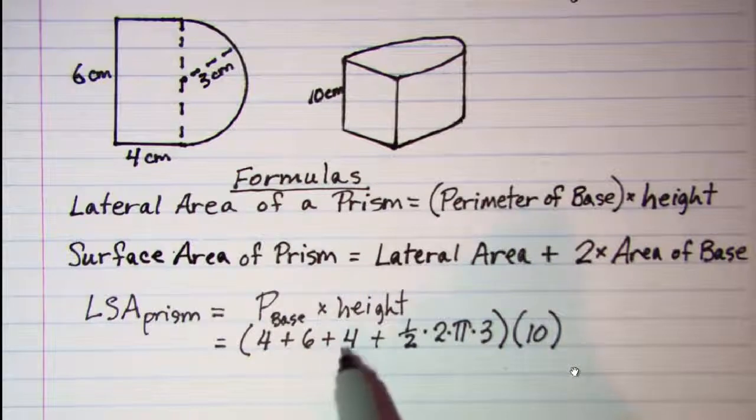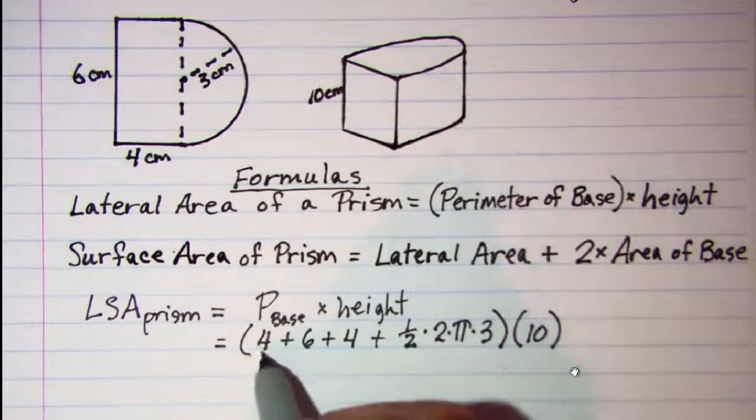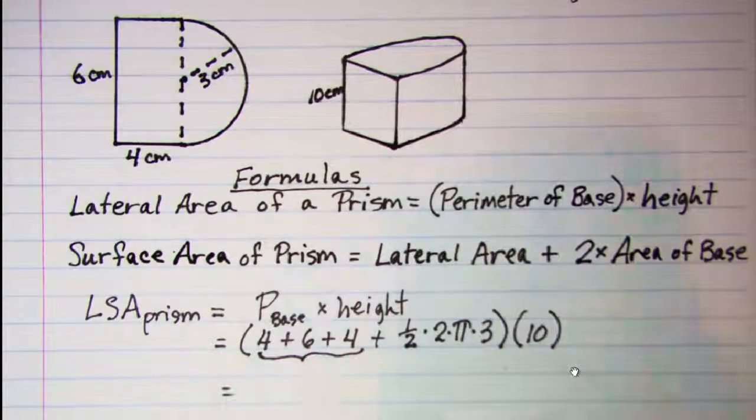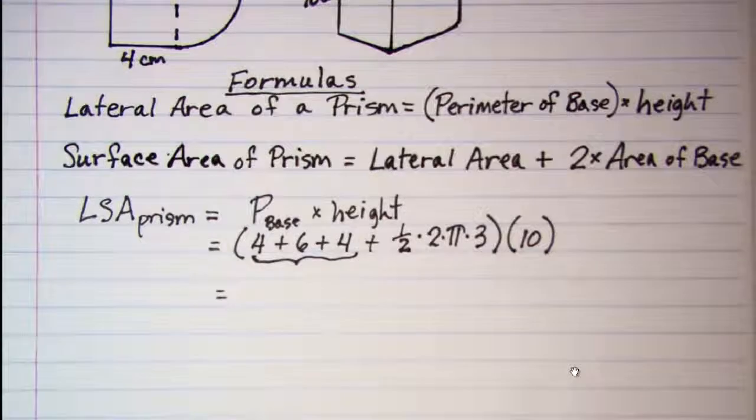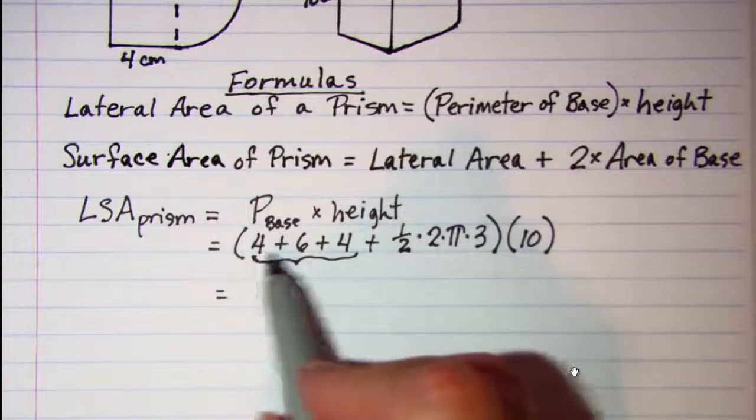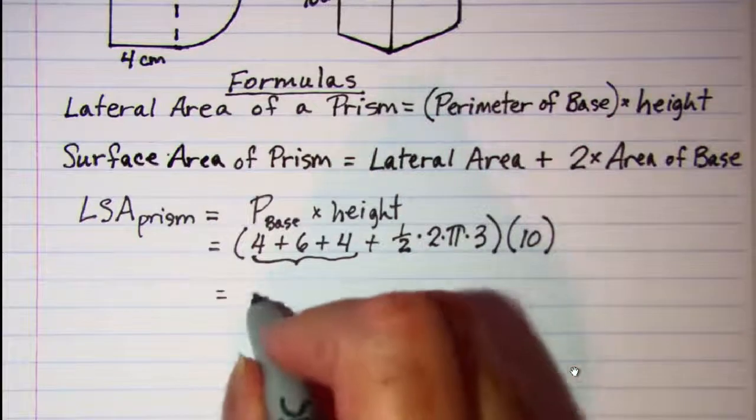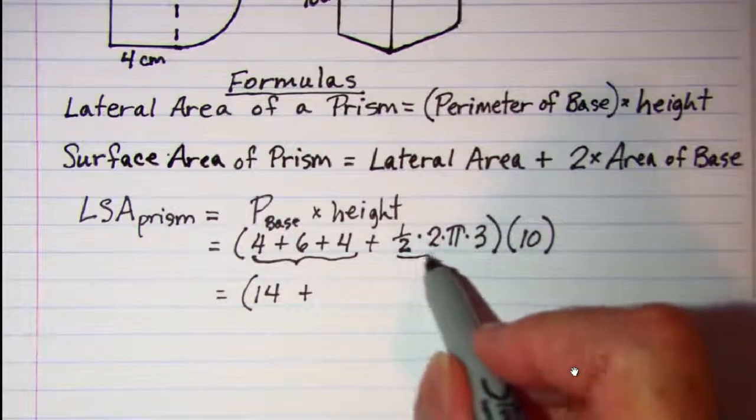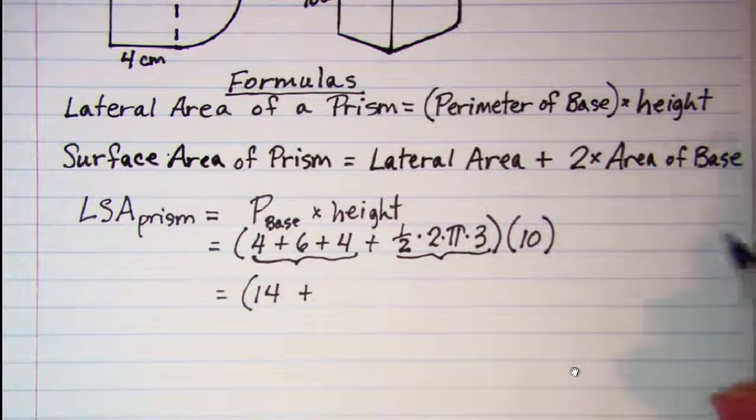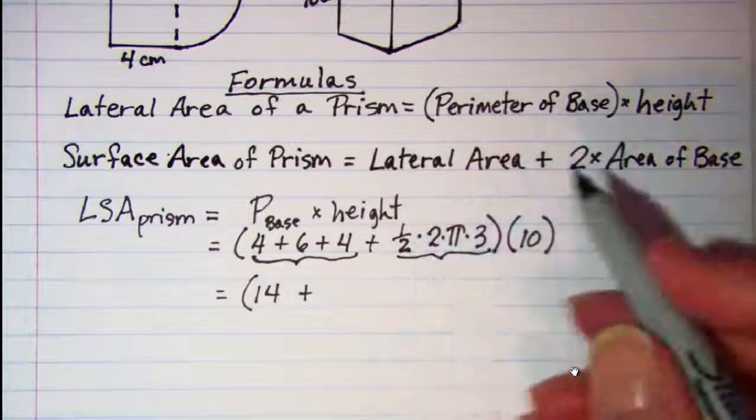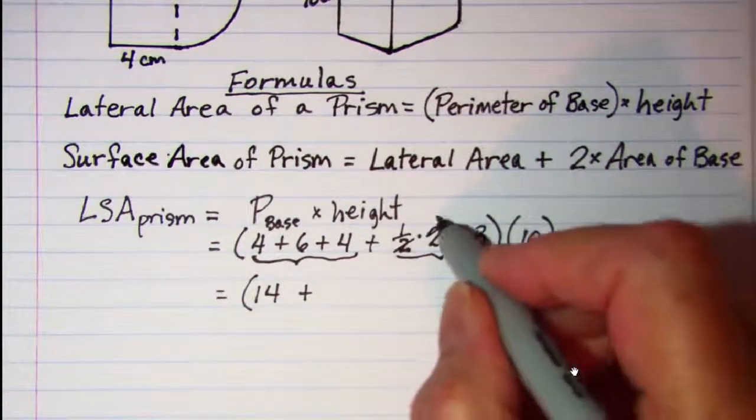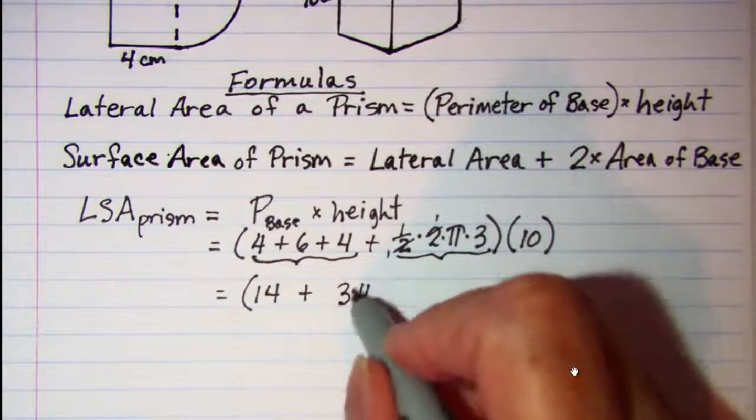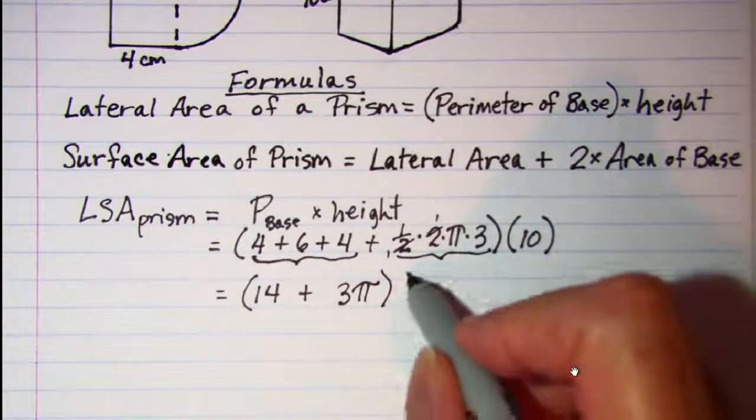Now in order to do this work we need to combine the rational numbers. So 4 + 6 + 4 is 14 and then we want to simplify this irrational part. The half of 2 I can cancel those and we have just 3π and then that is multiplied by the 10.